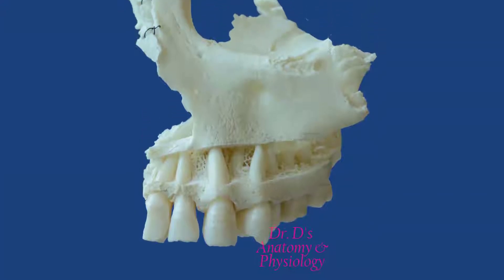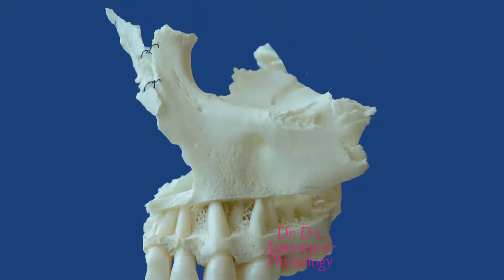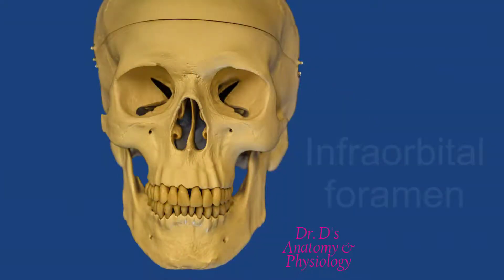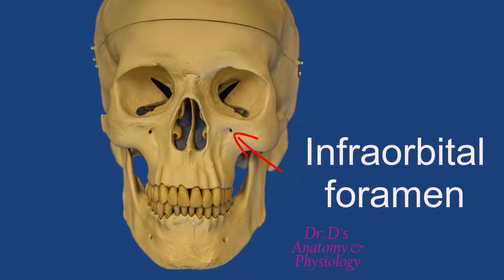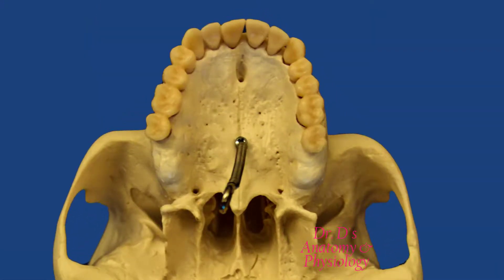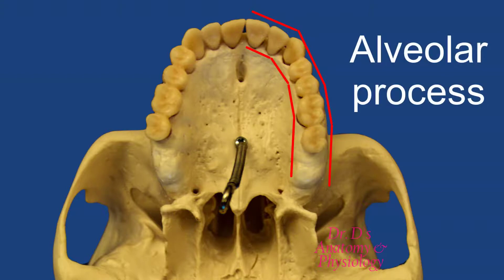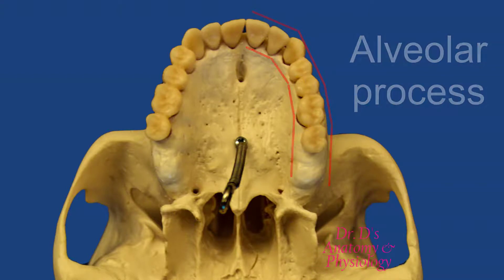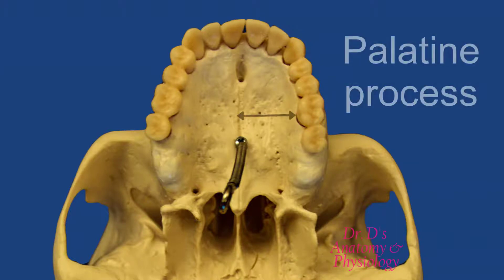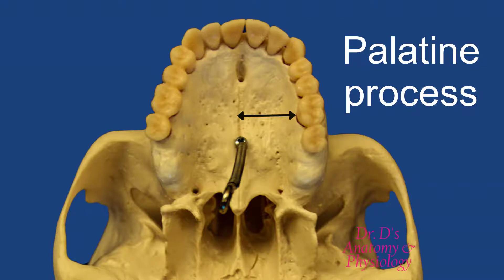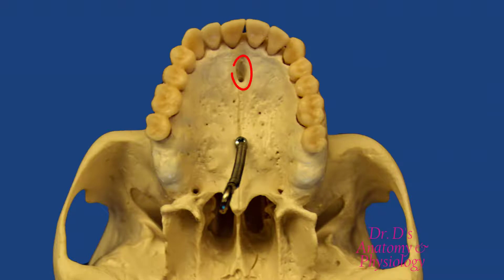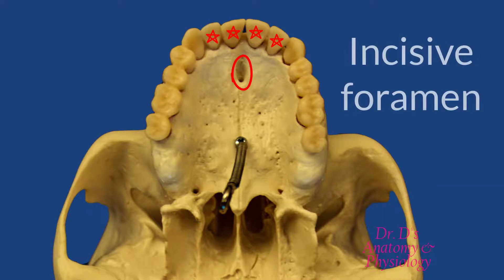We should also note another feature of the maxillary bone: an opening right below the orbit which is referred to as the infra-orbital foramen. Going back to the plastic skull, we can see the infra-orbital foramen very clearly. Looking at the inferior view of the skull with the mandible removed, we can see the alveolar process of one maxillary bone. From this view we can also see the palatine process of the maxillary bone, which forms most of the hard palate. The rest is formed by the palatine bone. Also from this perspective, there is a foramen right behind the incisors referred to as the incisive foramen.